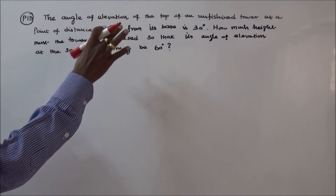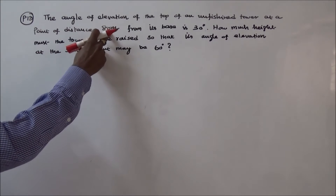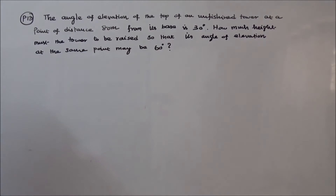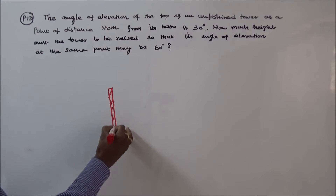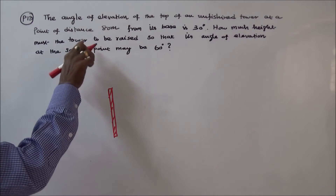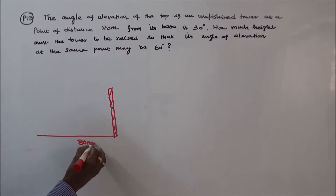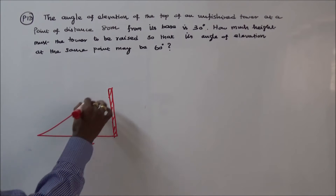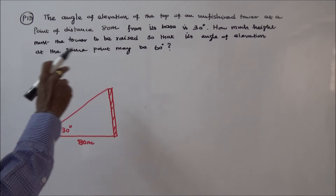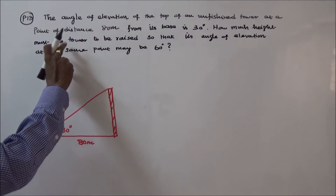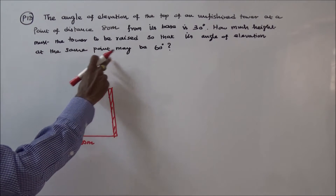The angle of elevation of the top of an unfinished tower at a point of distance 80 meters from its base is 30 degrees. How much height must the tower be raised so that its angle of elevation at the same point may be 60 degrees?